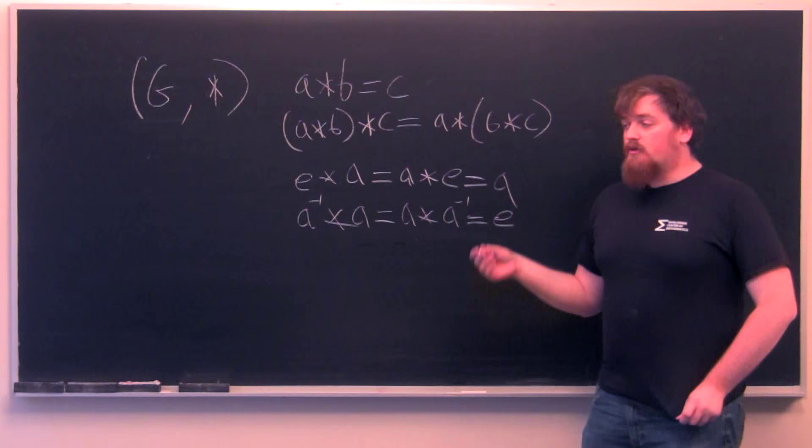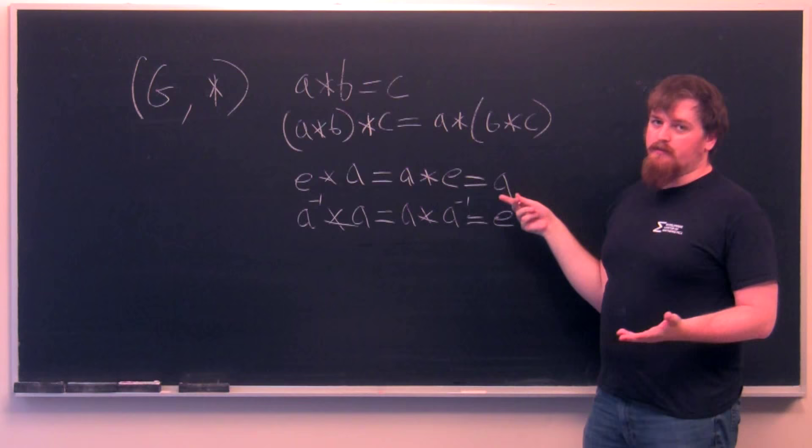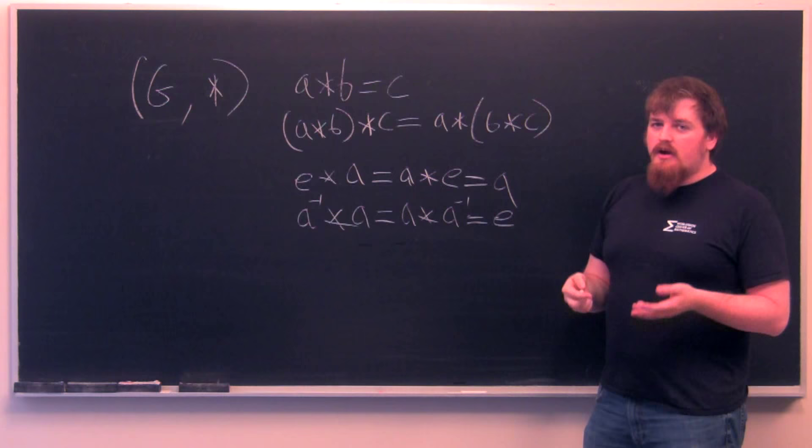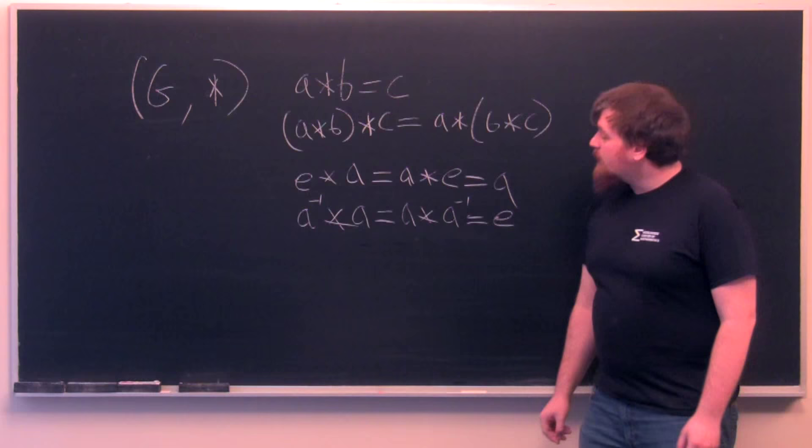So again, any set G and operation times that satisfies these four axioms together form a group. But that doesn't really tell you about what these kinds of groups look like. In order to demonstrate some of what they look like, we'll actually show you some examples.